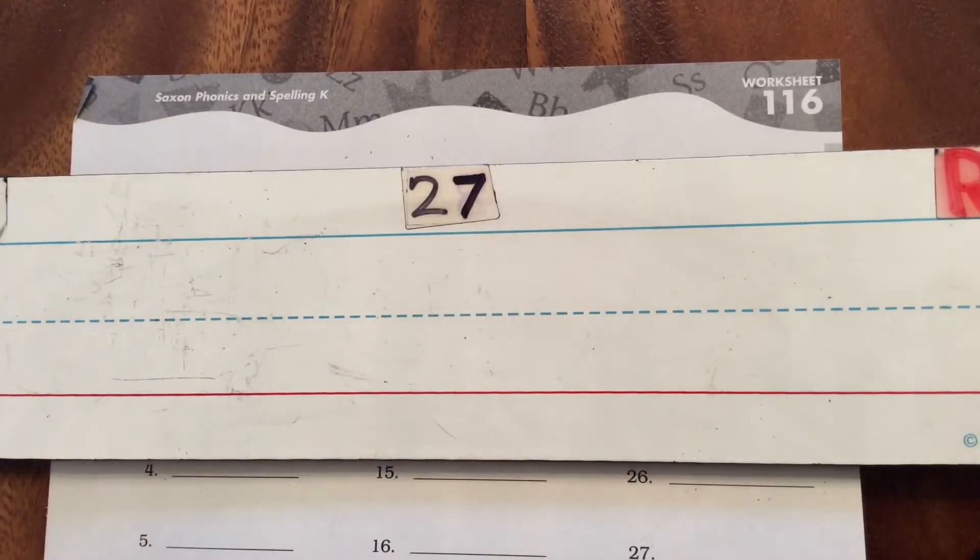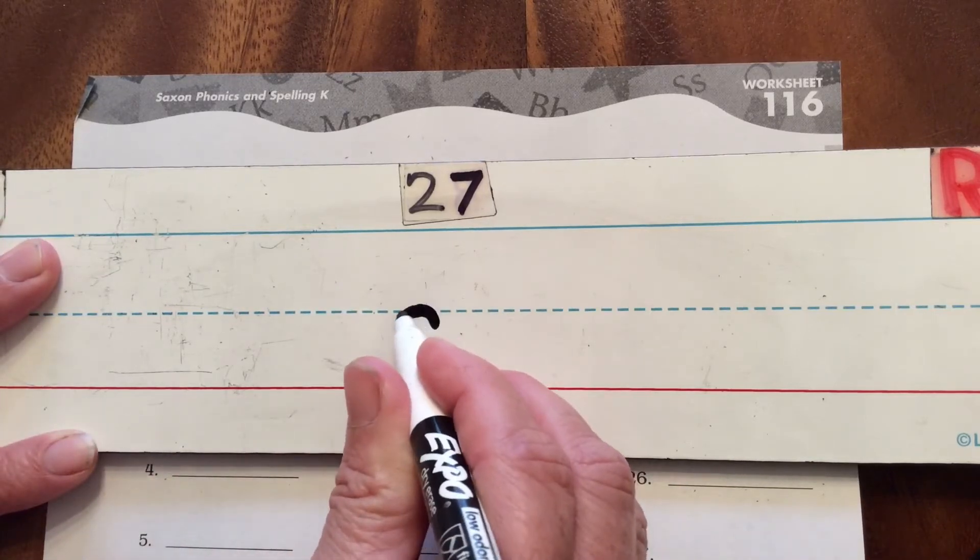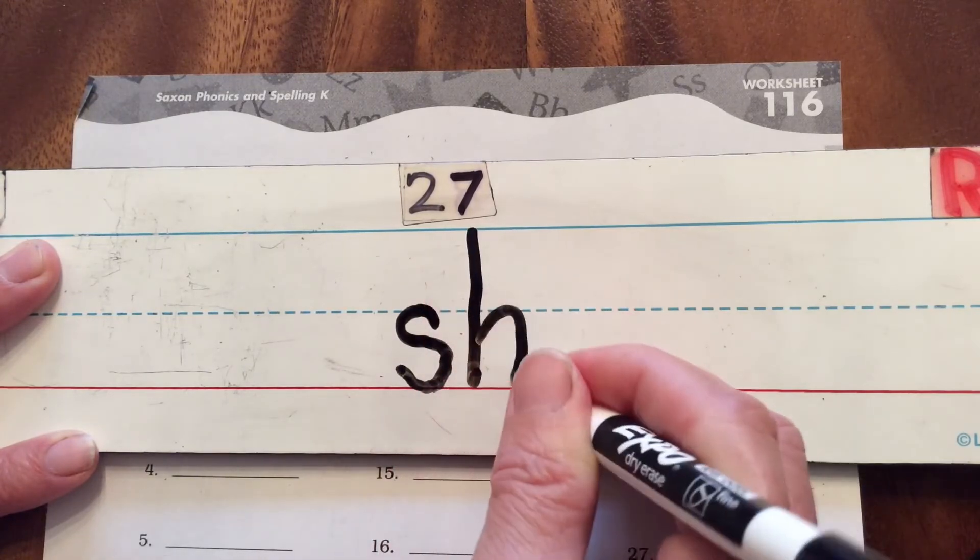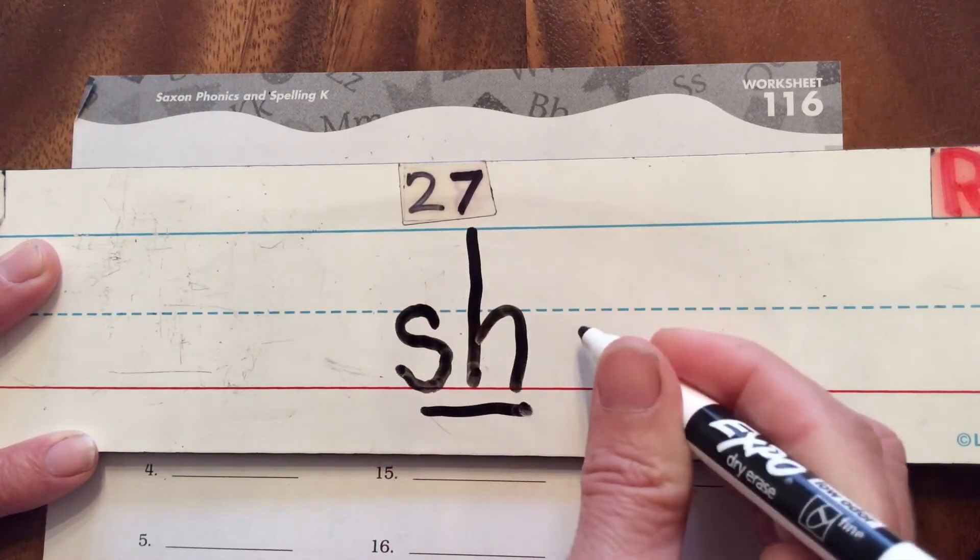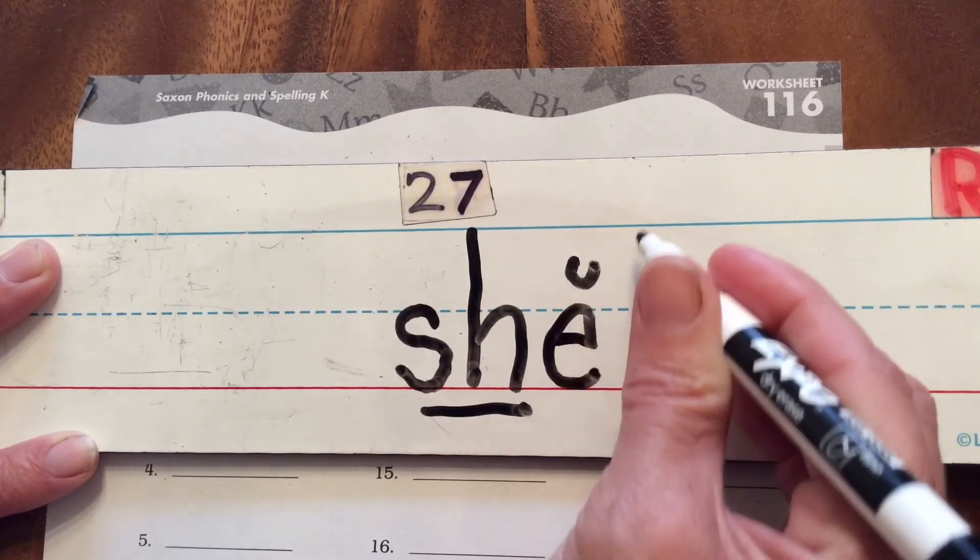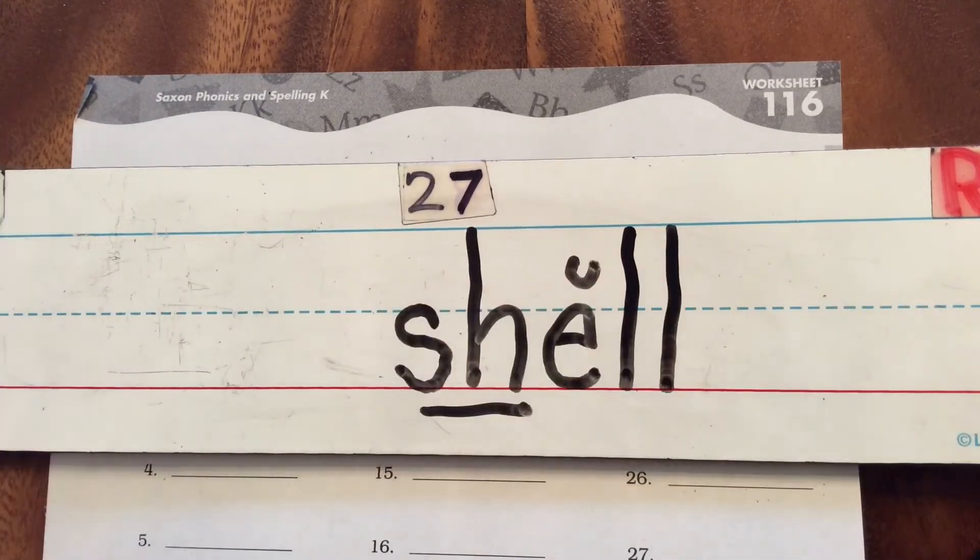Last one I want you to try and practice is shell. Shell is gonna have a twin consonant on the end. I want you to try it, and when you get done make sure yours looks like this: you've got sh, E our vowel is gonna be our short E, then I have twin consonant, the two L's on the end. Shell. Great job practicing those.